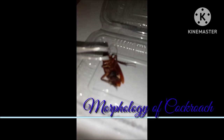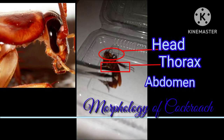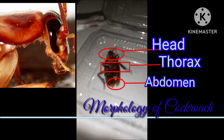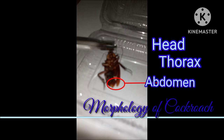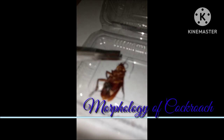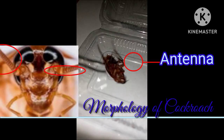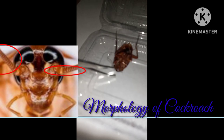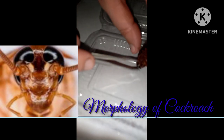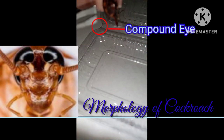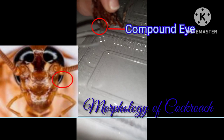The cockroach body is divisible into head, thorax, and abdomen. The head consists of a pair of antennae and compound eyes, as you can see here.